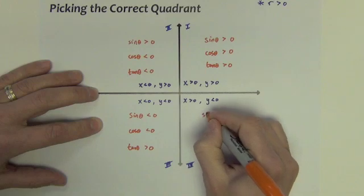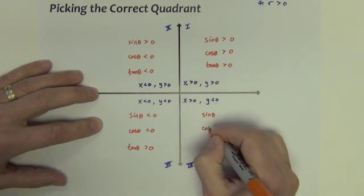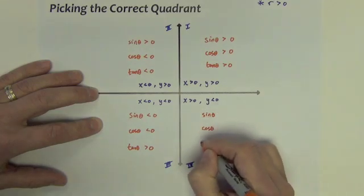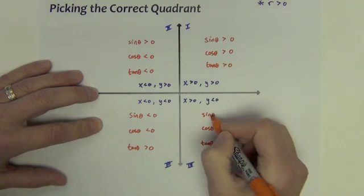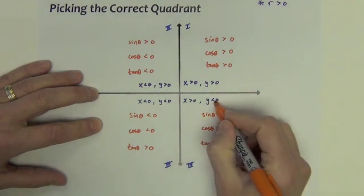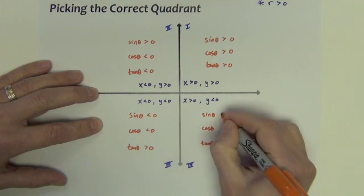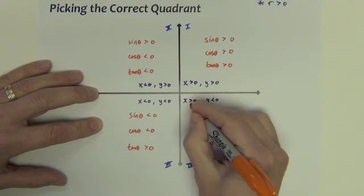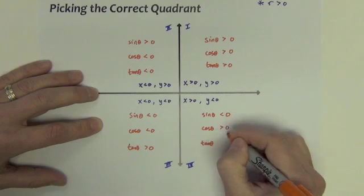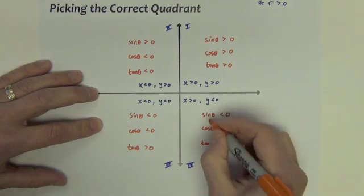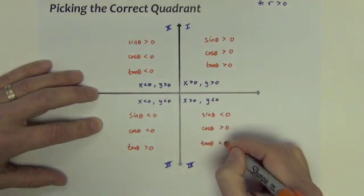In the last quadrant: sine is y over r — negative over positive — so that's negative. Cosine is x over r — two positives — so that's positive. Tangent is y over x — negative over positive — that's negative.